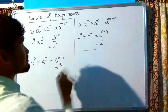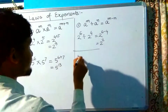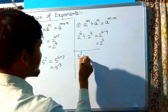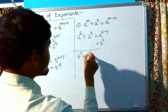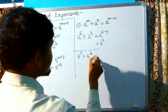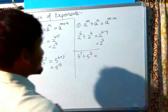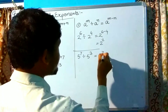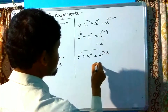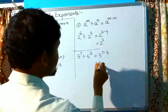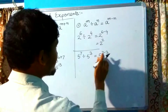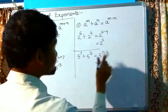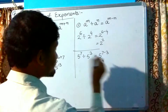Another example: 5 raised to the power 7 divided by 5 raised to the power 3 equals 5 raised to the power 7 minus 3. Since 7 minus 3 is 4, the answer is 5 raised to the power 4.